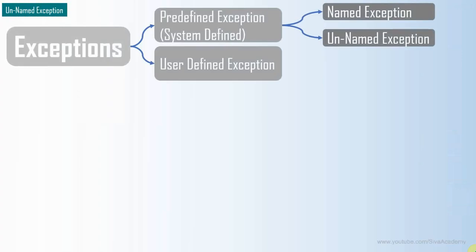In the previous video we have seen the different types of exceptions, like predefined exceptions and user-defined exceptions. In the predefined exception category, we have two more subcategories: named exceptions and unnamed exceptions.